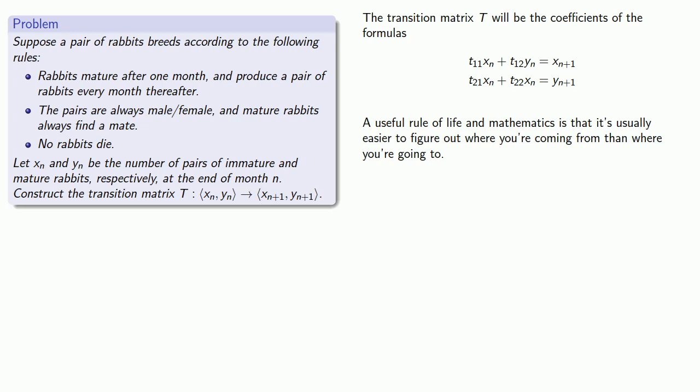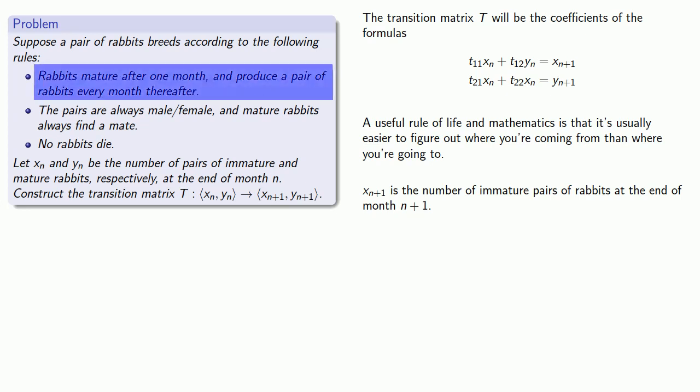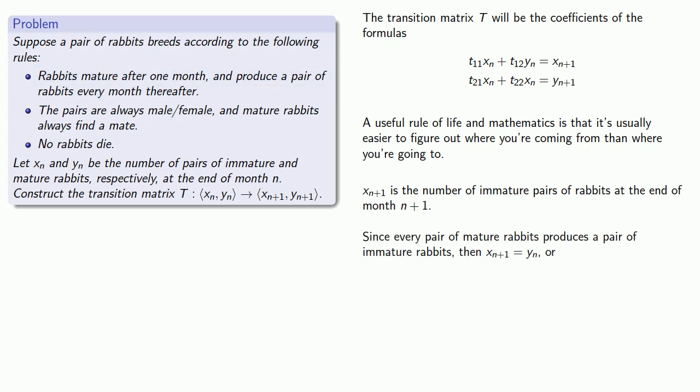So let's consider this. This xn plus 1 is going to be the number of pairs of immature rabbits at the end of month n plus 1. Now by our assumption, every pair of mature rabbits produces a pair of immature rabbits. So that means xn plus 1 will be equal to yn.